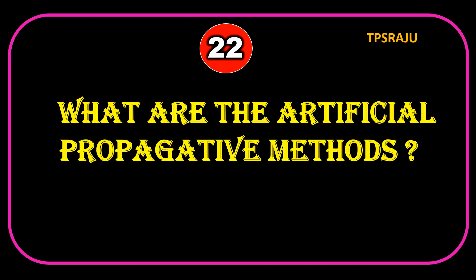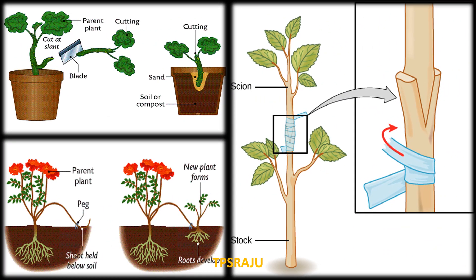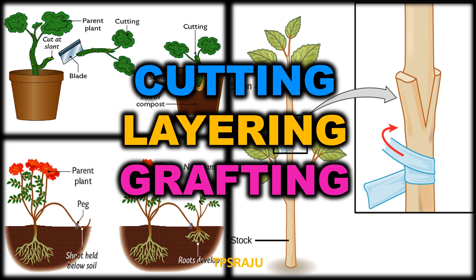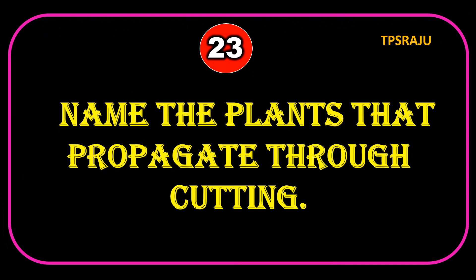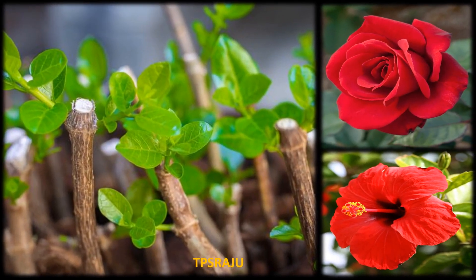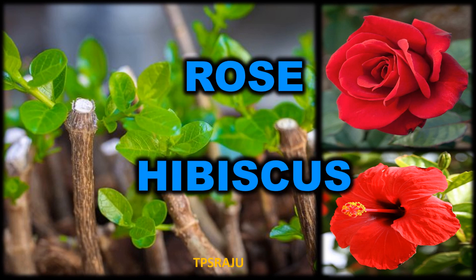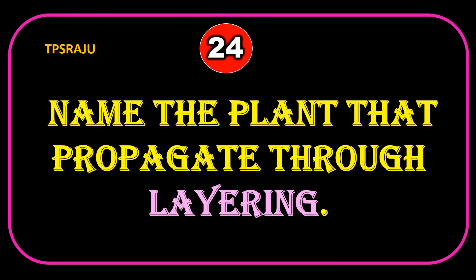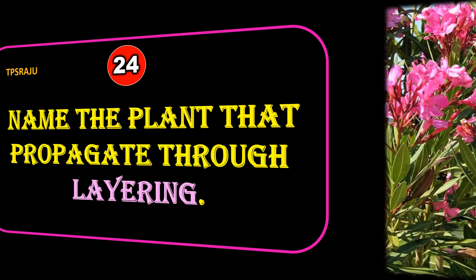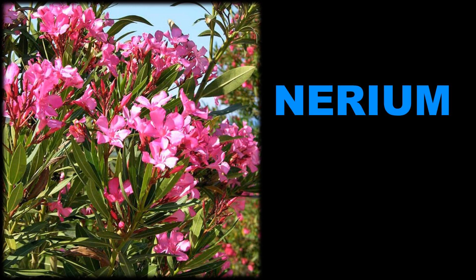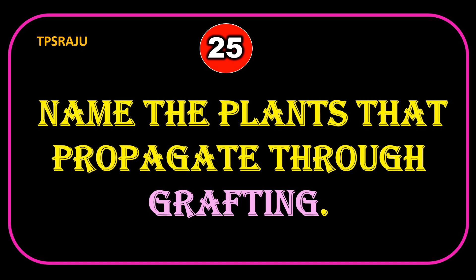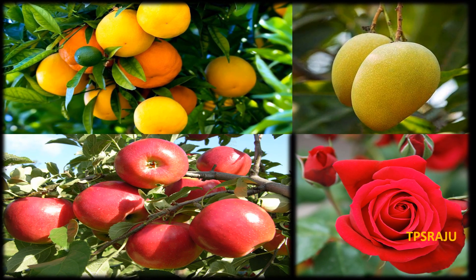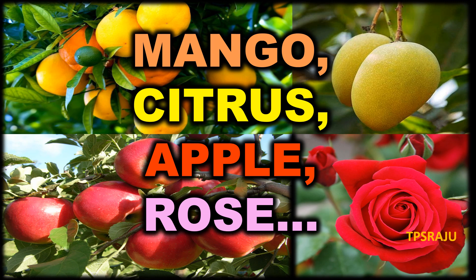What are the artificial propagation methods? Cutting, layering, and grafting. Name the plants that propagate through cutting. Dahlia, hibiscus, etc. Name the plants that propagate through layering. Jasmine, rose, etc. Name the plants that propagate through grafting. Mango, citrus, apple, rose, etc.